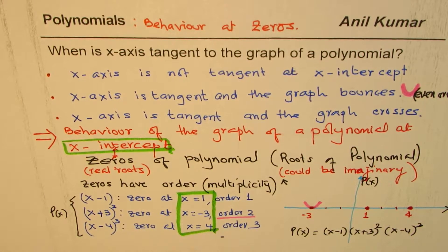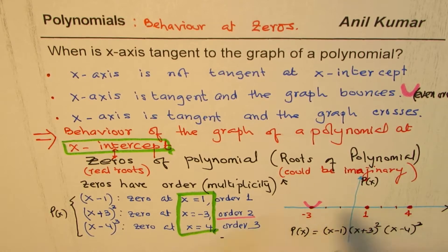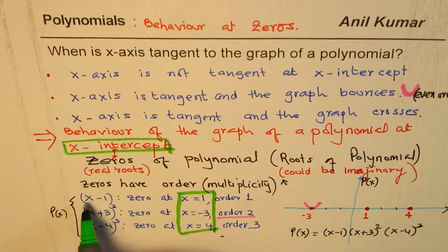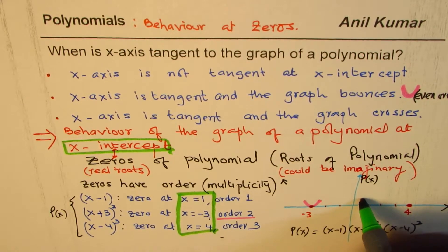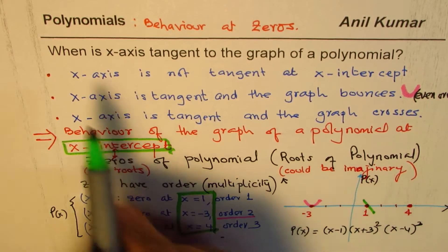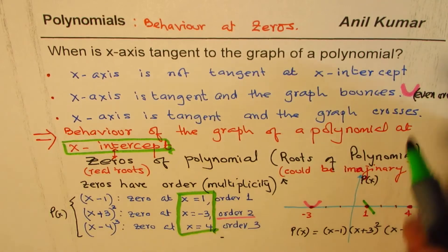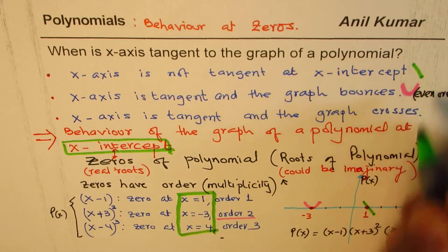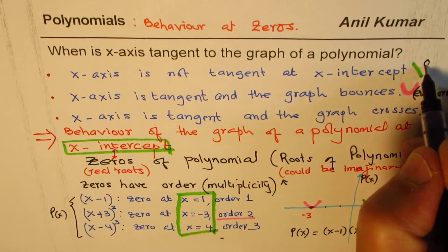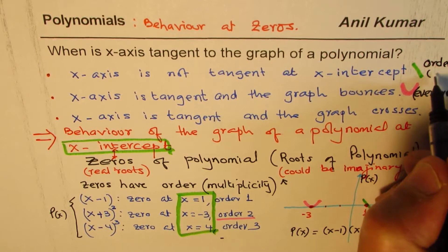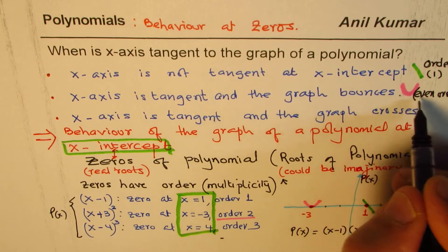At x = 1, the zero is linear — order 1. The graph just crosses like a line, so the x-axis is not a tangent at this x-intercept. It just crosses. We say the order is 1, or generally order is 2n where n... here the order is just 1.